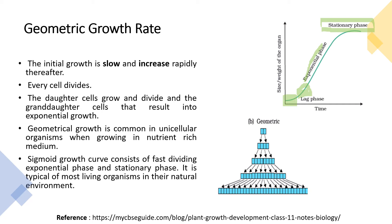During the log phase, the plant or cells adapt to the environment. Then comes the lag phase, in which the plant adapts and growth begins. After this comes the exponential phase, followed by the stationary phase. The daughter cells grow and divide, and the granddaughter cells result in exponential growth.